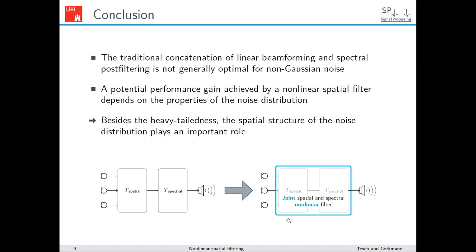In conclusion, the traditional concatenation of linear beamforming and spectral post filtering is not generally optimal for noise that does not follow a Gaussian distribution. The potential performance gain from a non-linear spatial filter depends on the properties of the noise distribution, and we showed that besides heavy-tailedness, the spatial structure of the noise distribution plays an important role. Since realistic noise scenarios are spatially diverse, this motivates moving toward architectures that use DNNs for non-linear spatial filtering in multi-channel speech enhancement.